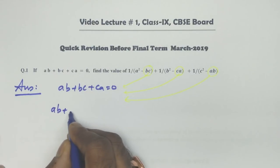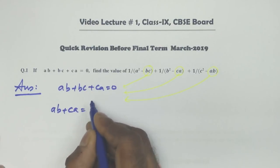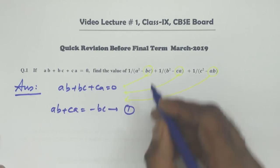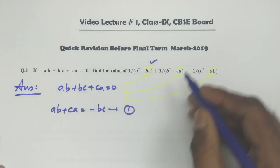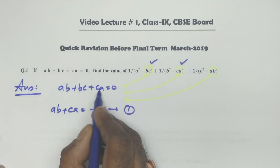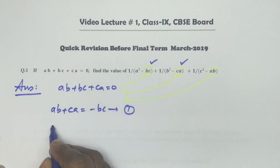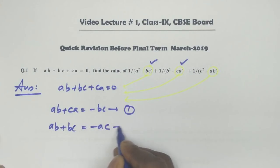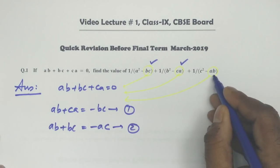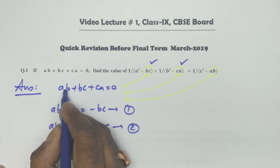From AB plus BC plus CA equals zero, I can write AB plus CA equals minus BC — this is equation number one. Then, shifting CA to the right hand side: AB plus BC equals minus AC — this is equation two. Then shifting AB to the right hand side gives equation three.